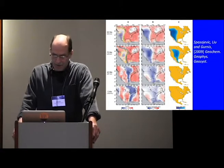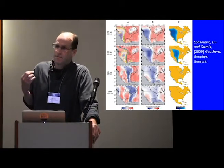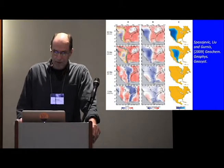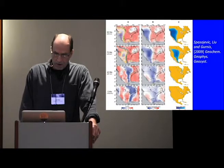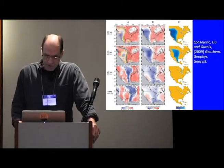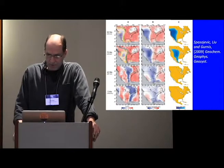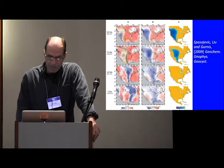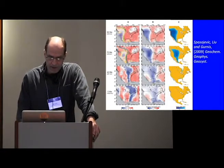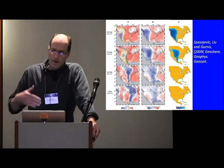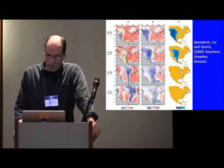The Farallon plate subduction history not only impacts present-day stress state and dynamics of North America, but it's also had a profound influence on the dynamic topography through time of North America. And Gurnis' group has looked at this a lot. This is a paper by Spesodziewicz, Liu, and Gurnis. And they looked at the history of subduction and modeled that through time and predicted the dynamic topography. This is 90 million years, Cretaceous. And with that prediction of topography, they predicted the Cretaceous seaway or relative sea level change. And they verified their models by comparing them with stratigraphic record.